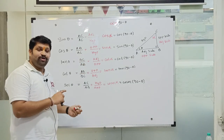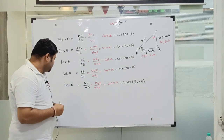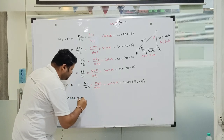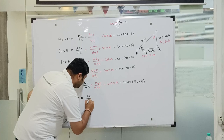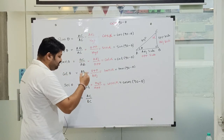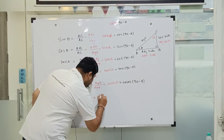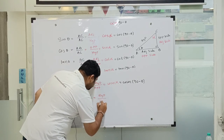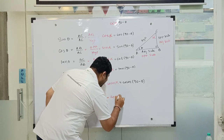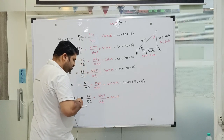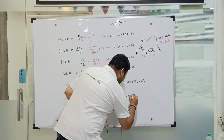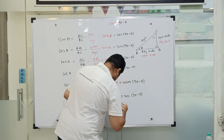Now the last ratio: cosec theta is equal to AC upon BC. With reference to alpha, it is hypotenuse upon the adjacent side, which is sec alpha. So cosec theta is equal to sec of 90 minus theta.